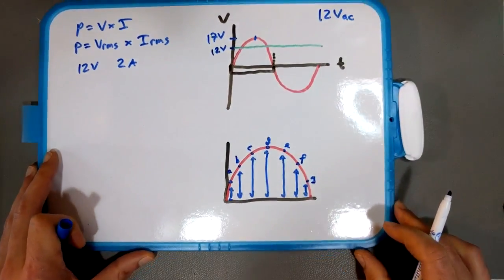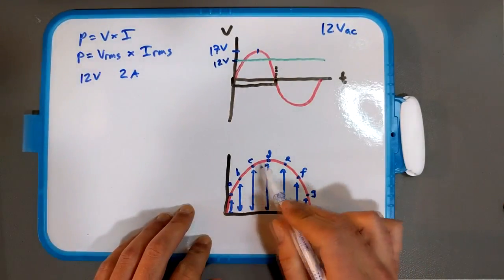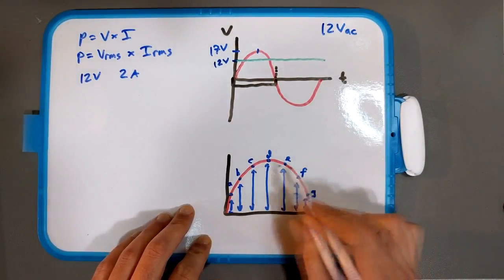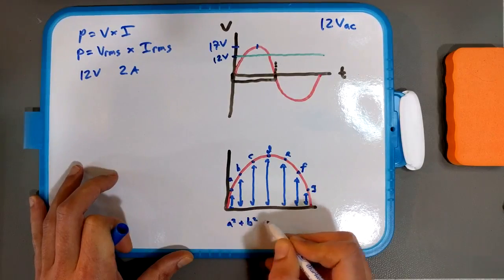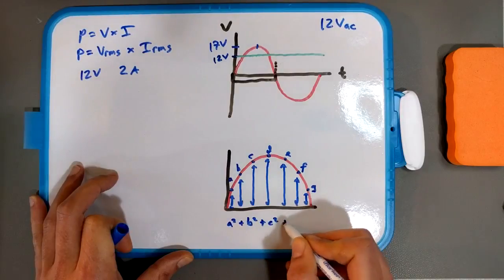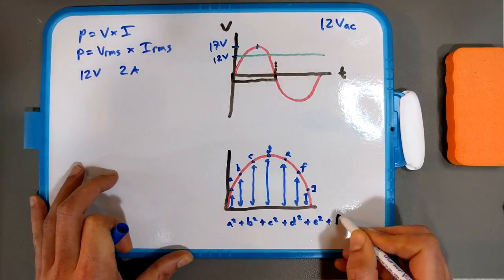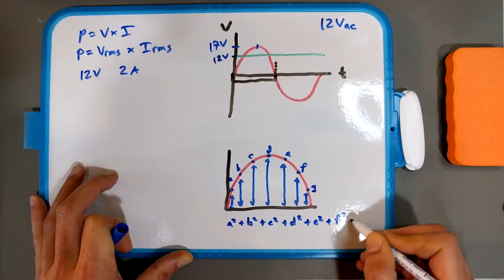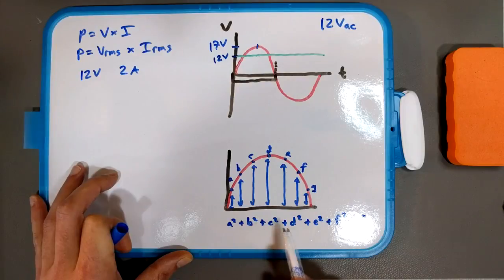Okay, so the root mean square is each of these values, A, B, C, D, E, F, G. You square them. A squared plus B squared plus C squared plus D squared plus E squared plus F squared plus G squared. One, two, three, four, five, six, seven values. You square each of them.